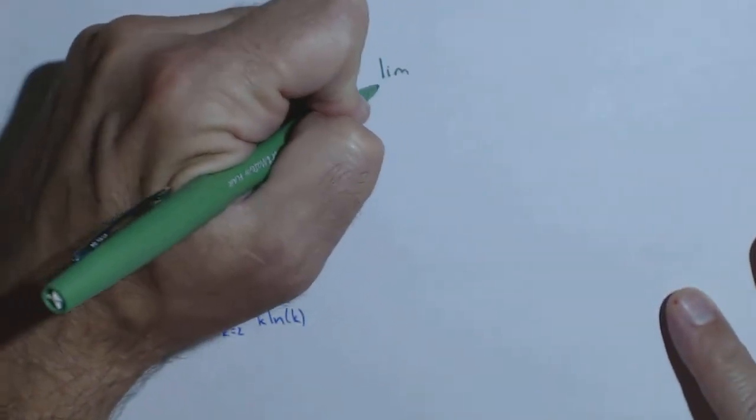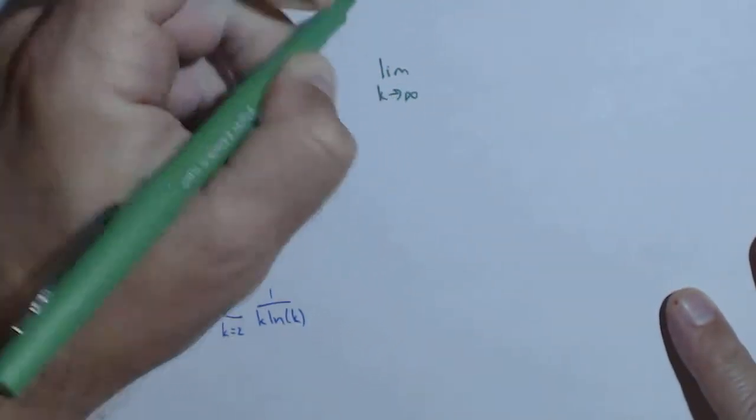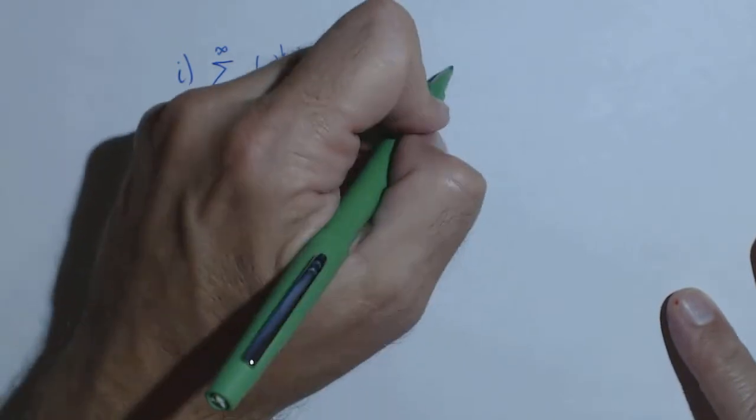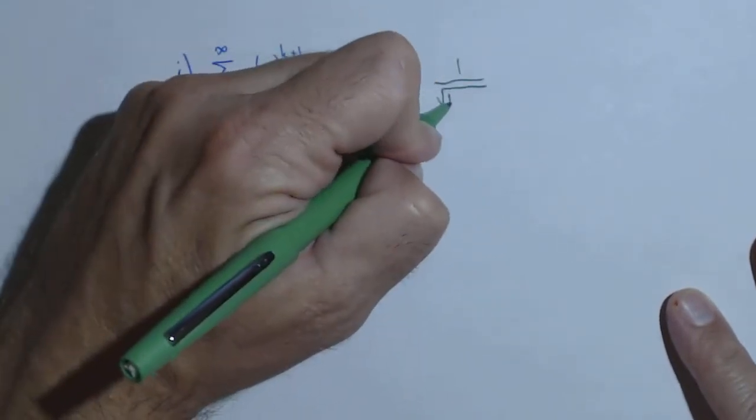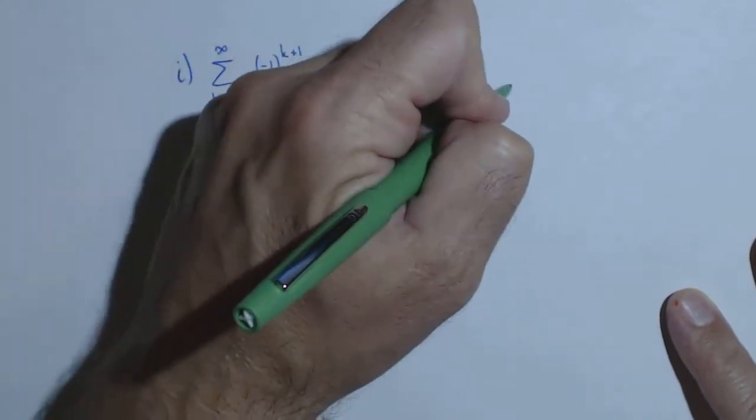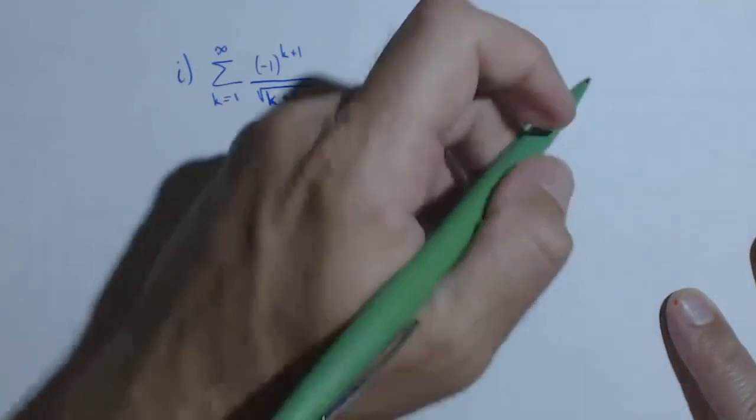So what I'm going to look at is the limit as k goes to infinity of everything except for the alternating piece, so 1 over square root of k plus 1. This is not a difficult limit, it goes to 0.